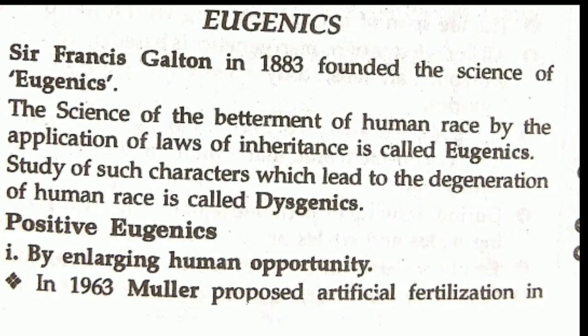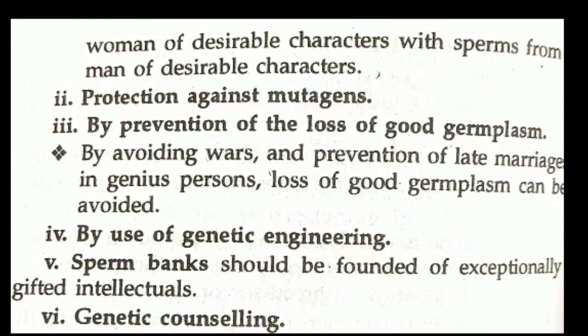Positive eugenics will enlarge human opportunities. In 1963, Muller proposed artificial fertilization in women of desirable characters with sperm from men of desirable characters. Muller's artificial fertilization concept is a proposal by which it is possible to develop desired characters in the offspring.